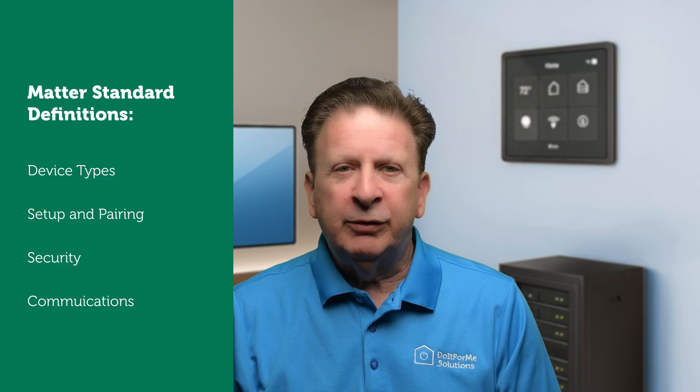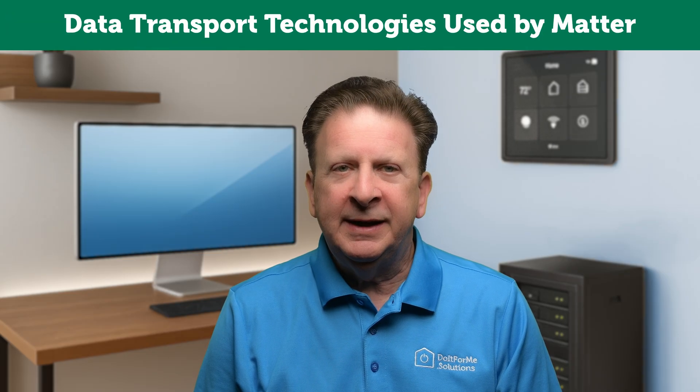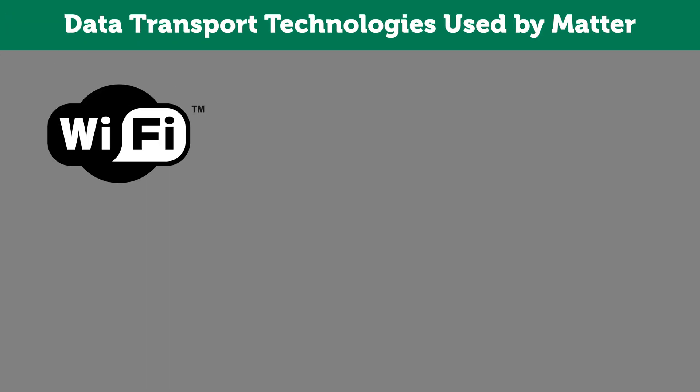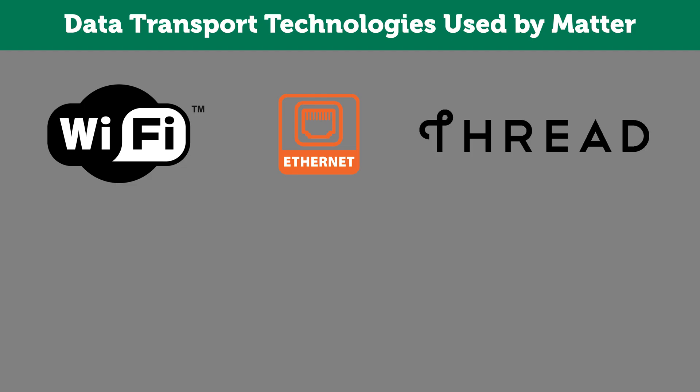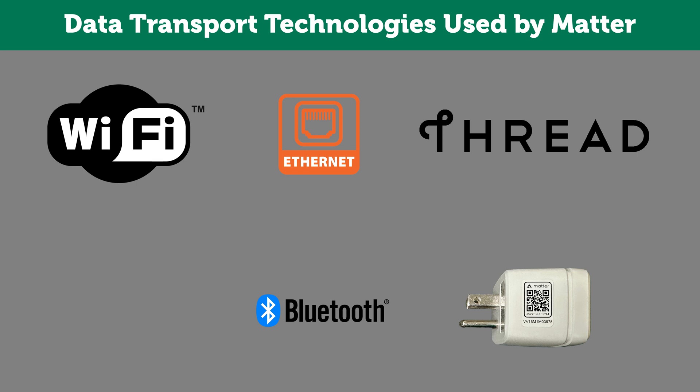Matter itself doesn't carry the signals over the air. Instead, it rides on top of existing transport technologies — Wi-Fi, Ethernet, and Thread. Bluetooth Low Energy, or BLE, is still used, but only for initial setup, like when you scan a QR code label to add a device or configure the initial Wi-Fi connection. Think of Matter as the language, then Wi-Fi, Ethernet, and Thread are the delivery methods.